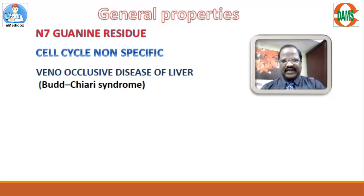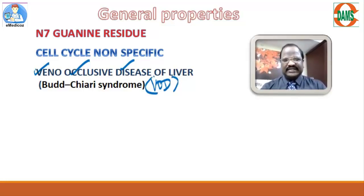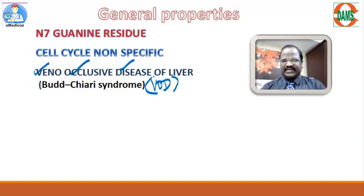The first general property is acting on the N7 guanine residue. Second, they are all cell cycle non-specific. Third, the most important point: the majority of alkylating agents may cause an important side effect called veno-occlusive disease of the liver, simply called VOD of the liver — also called hepatic vein thrombosis or Budd-Chiari syndrome.